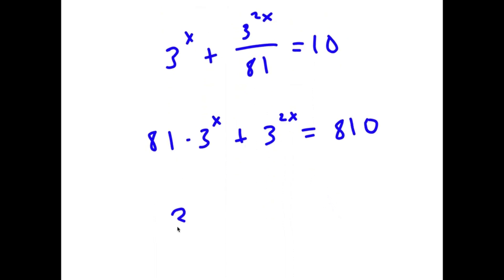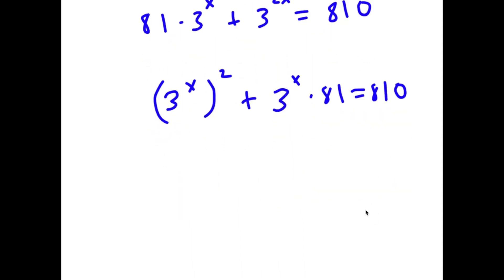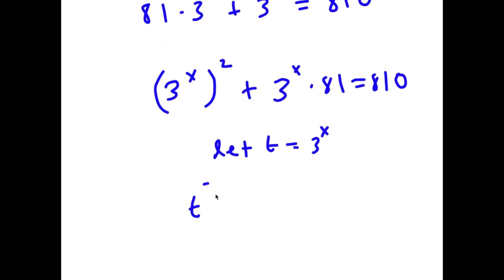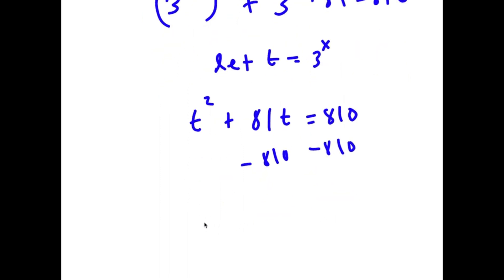Now 3 to the power of 2x is the same thing as 3 to the power of x to the power of 2. So I have 3 to the power of x squared plus 81 times 3 to the power of x is equal to 810. I'm going to let the variable t equal 3 to the power of x. Now I have t squared plus 81t is equal to 810. If I subtract 810 on both sides, I get t squared plus 81t minus 810 is equal to 0.